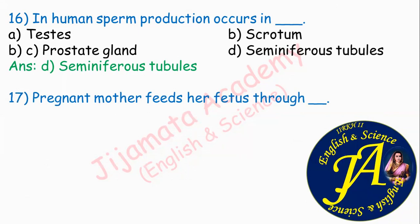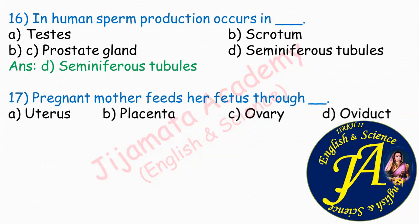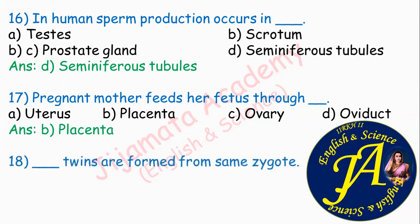A pregnant mother feeds her fetus through dash. Options are uterus, placenta, ovary, oviduct. The correct answer is B: placenta. Placenta is the correct answer — the mother nourishes the baby through the placenta.